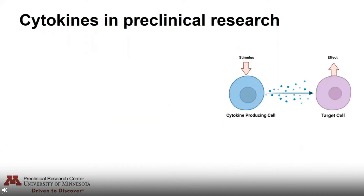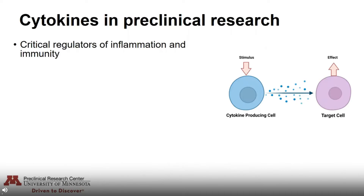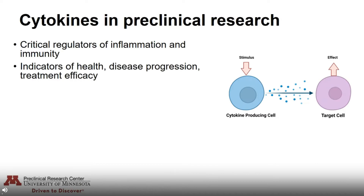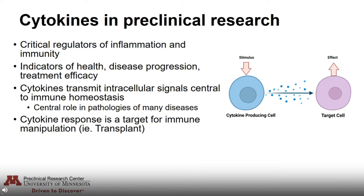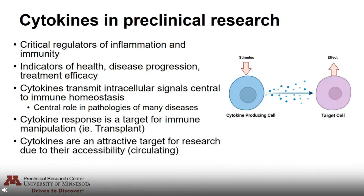Cytokines are a common analyte of interest in preclinical research because they are critical regulators of inflammation and immunity. They are indicators of health status, disease progression, as well as monitoring treatment efficacy. Cytokines transmit intercellular signals that are central to immune homeostasis and play a central role in the pathologies of many diseases. Cytokine response is a target for immune manipulation, such as in solid organ transplantation, and they are a very attractive target for research due to their accessibility — they're highly abundant in circulating blood, so they can be sampled during minimally invasive blood draws throughout a study.